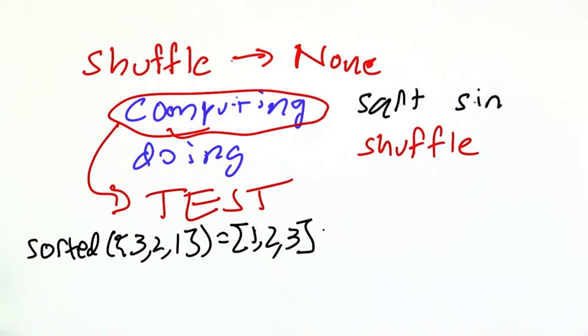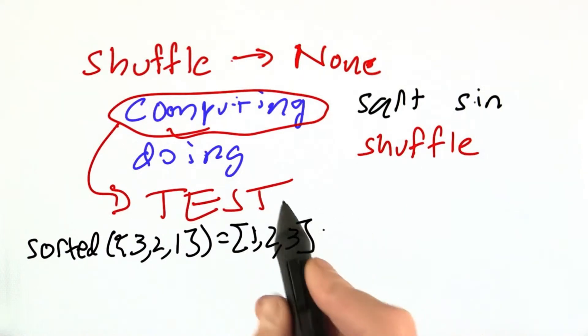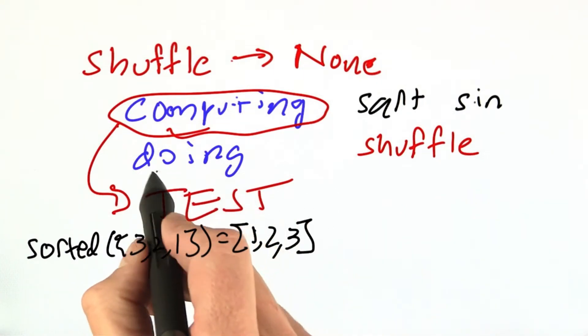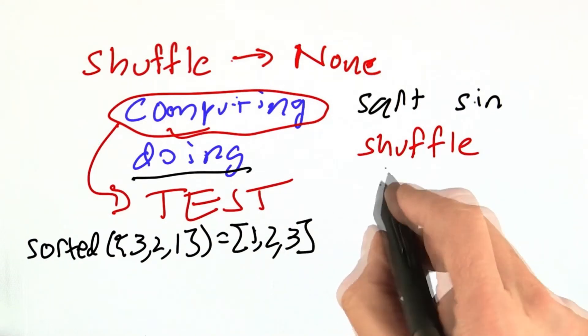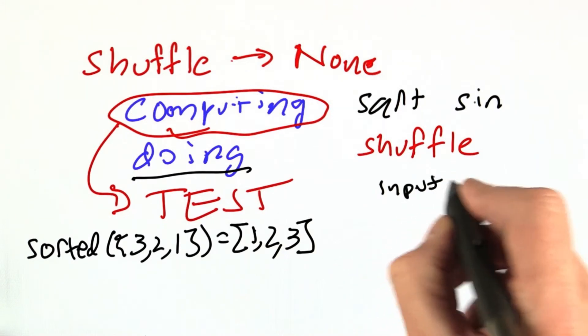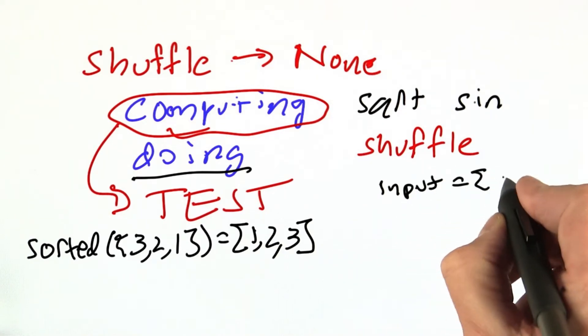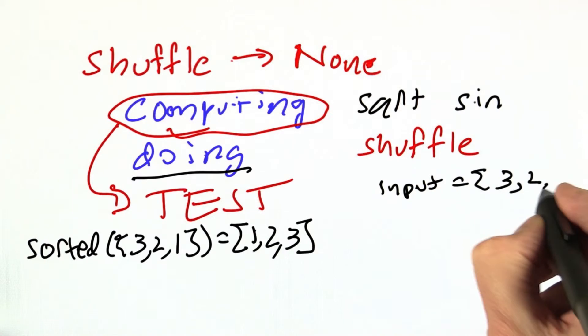A single line and I'm done. On the other hand, if I want to test a subroutine that does something that affects the state of the world, I have to first set up some state. Let's say input equals [3, 2, 1].